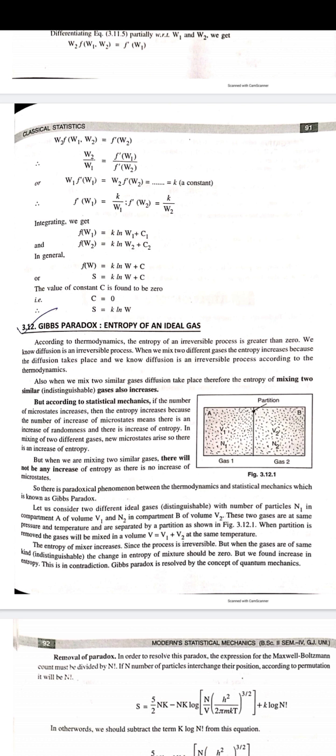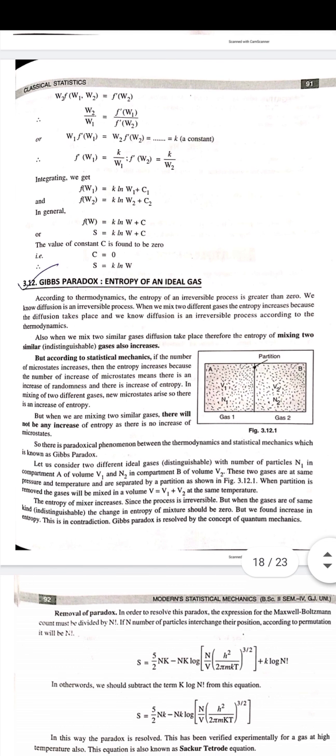So W2 by W1 equals F prime of W1 by F prime of W2. Both sides of the ratio are equal, representing a constant with value equal to k. Cross multiplying, we get F prime of W1 equals k by W1.